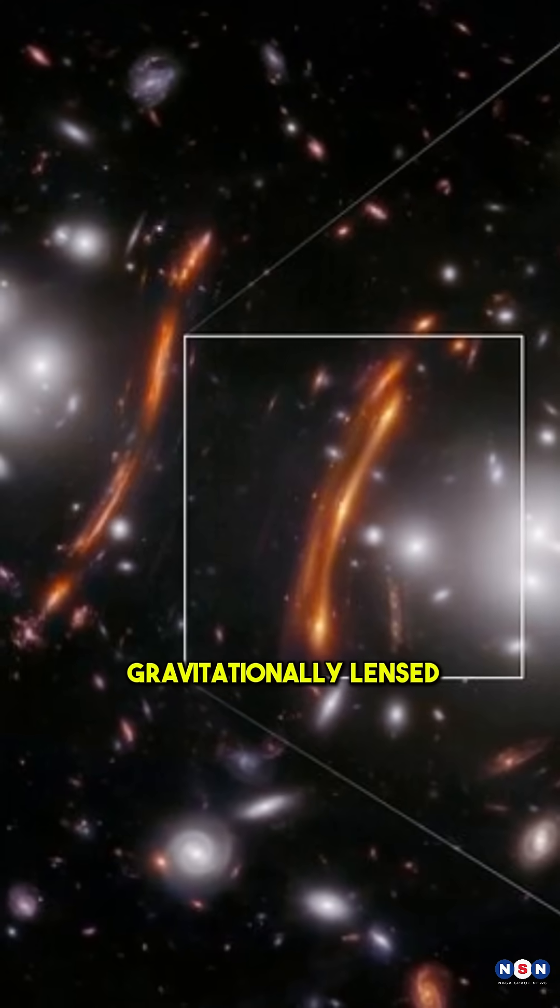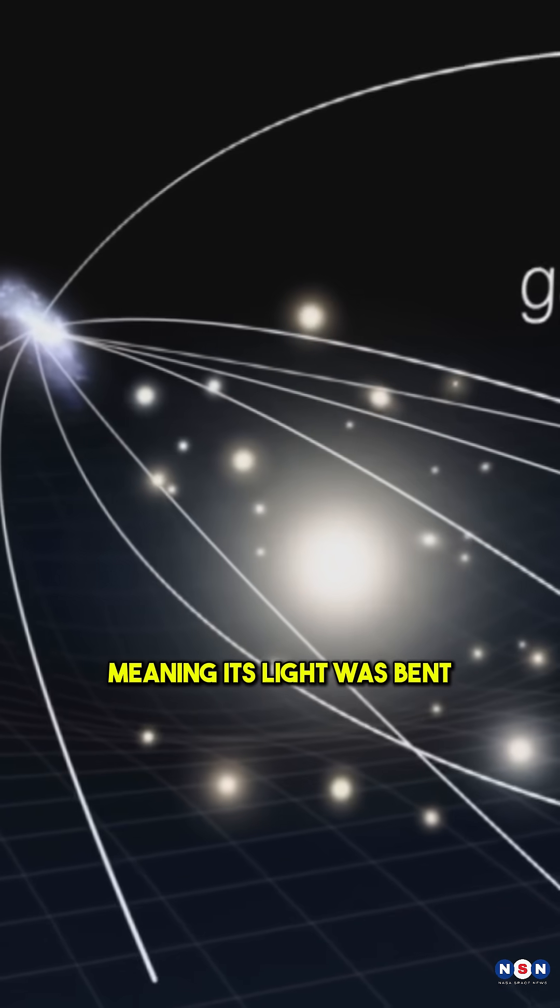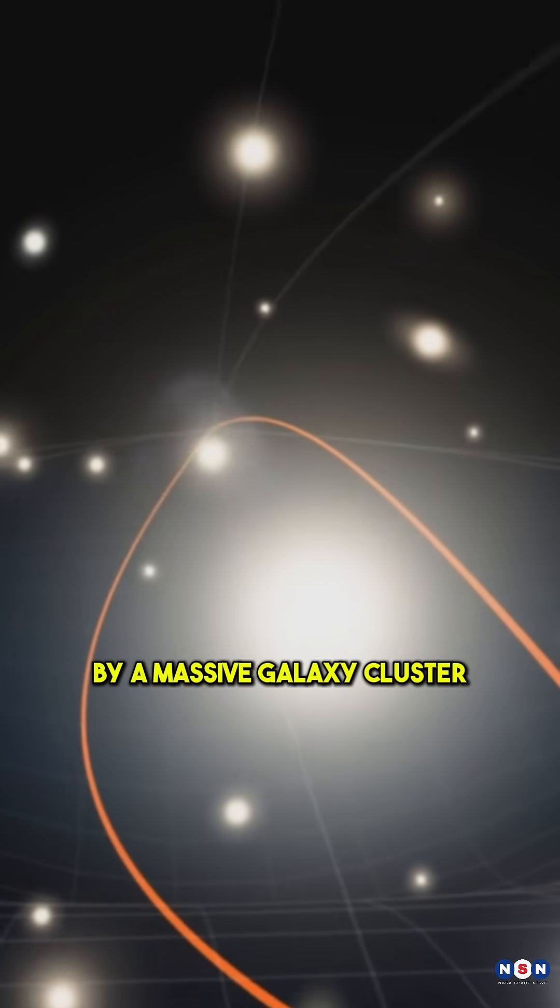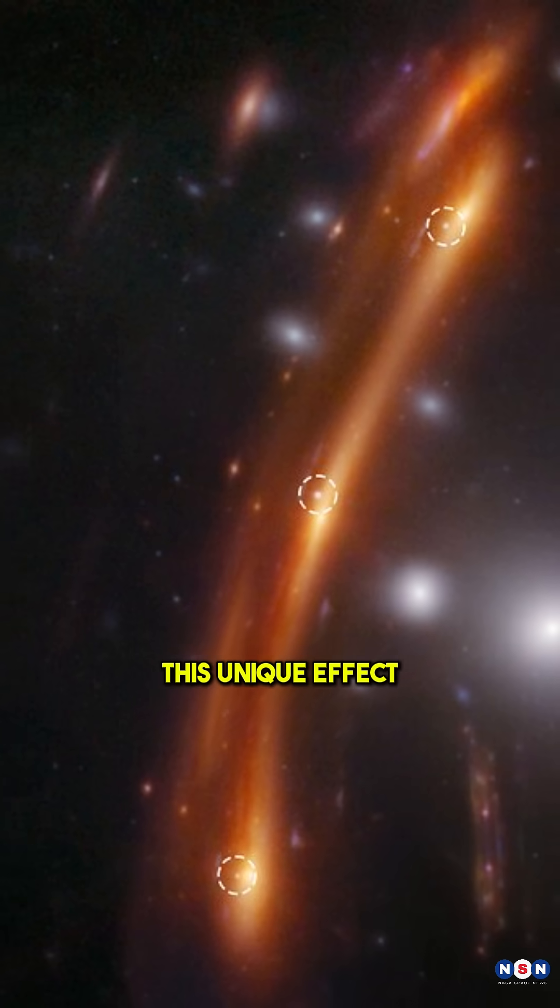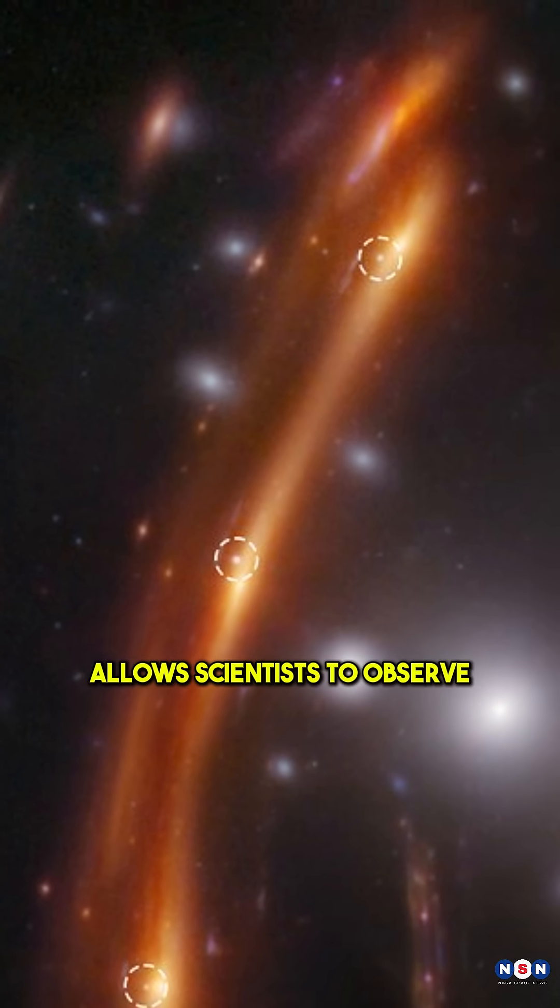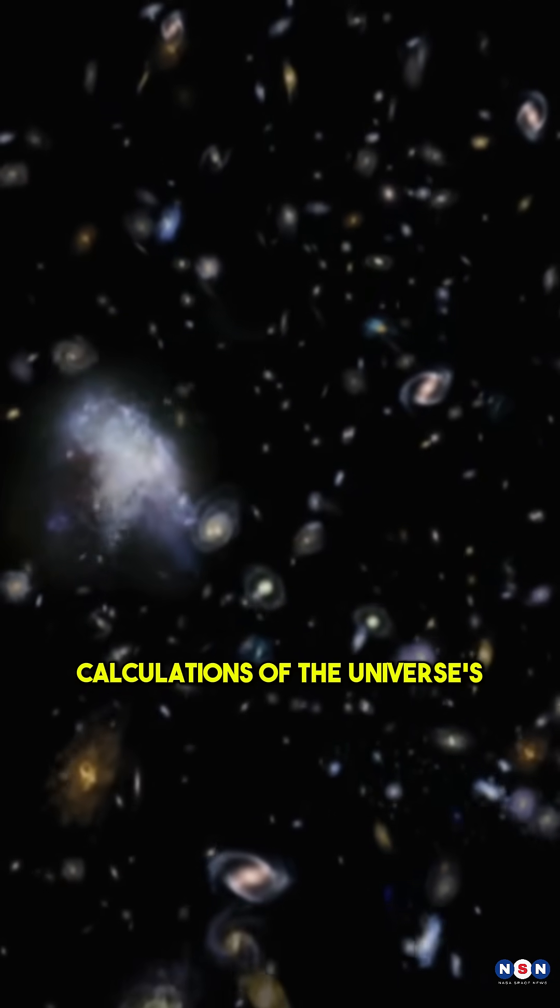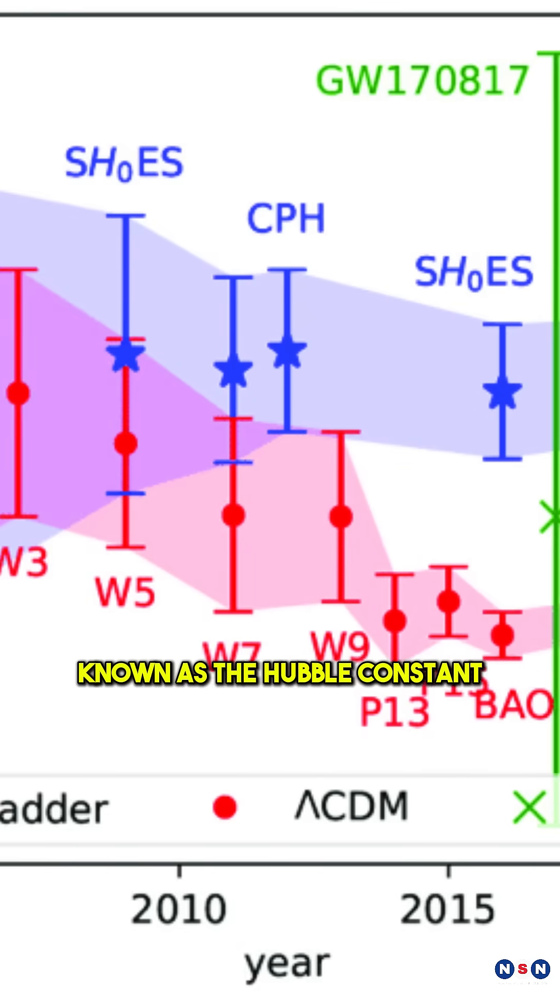This supernova is gravitationally lensed, meaning its light was bent and split into three distinct images by a massive galaxy cluster. This unique effect allows scientists to observe it from multiple angles and refine their calculations of the universe's expansion rate, known as the Hubble constant.